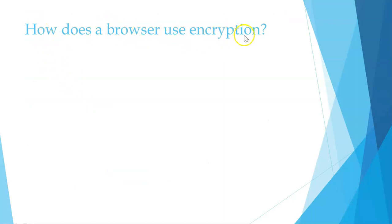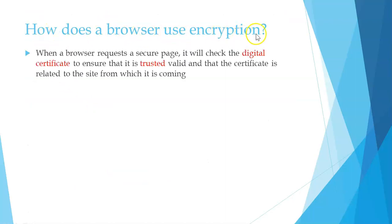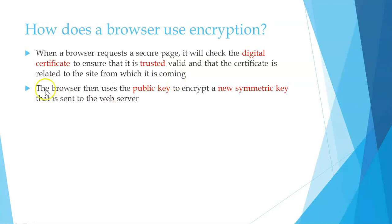How does a browser use encryption? When a browser requests a secure page, it will check the digital certificate to ensure that it is trusted and valid and that the certificate is related to the site from which it is coming. The browser then uses the public key to encrypt a new symmetric key that is sent to the web server.